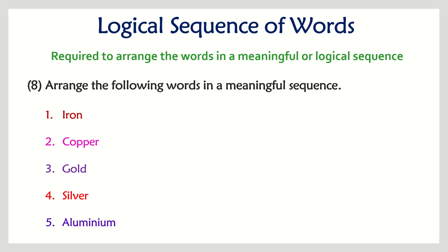Next question: iron, copper, gold, silver, and aluminium. This question is a little different — it relates to the price or cost of metals. The cheapest is iron, after iron comes aluminium, after aluminium is copper, after copper is silver, and the costliest of all the options is gold. That is the logical sequence.